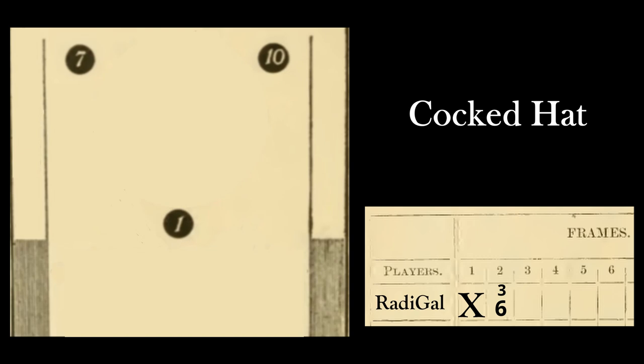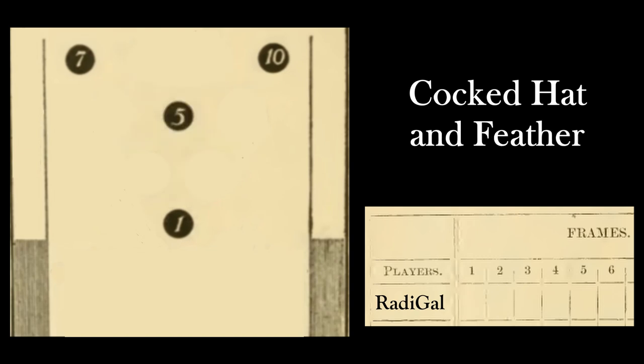The next game I want to talk about is called the Cocked Hat and Feather. In this game, you put the 1, 5, 7, and 10 up, and the goal is to knock down every single pin except for the 5 pin. So this scores differently than the Cocked Hat. For this game, you get three balls per frame. They don't remove the dead wood, and if you don't knock down all the pins except for the 5, you get a zero for that frame.